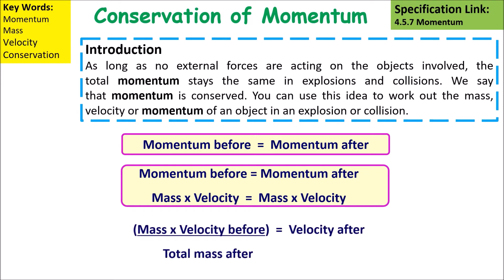If we want to work out the velocity after, we can rearrange our equation to give us: velocity after equals mass times velocity before divided by the total mass after.